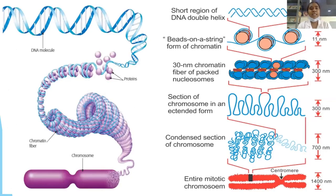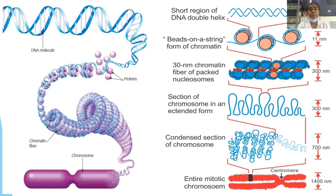This diagram explains the DNA molecule, proteins, chromatin fibers, and chromosome — and how they are formed. First, a short region of DNA double helix is formed. Then it forms into a bead-on-a-string form of chromatin. Then a 30 nm chromatin fiber of packed nucleosomes can be seen. Sections of chromosome in an extended form can be seen, out of which condensed sections of chromosome emerge. At last, the entire mitotic chromosome is formed, where the central mirror — the centromere — can be seen.